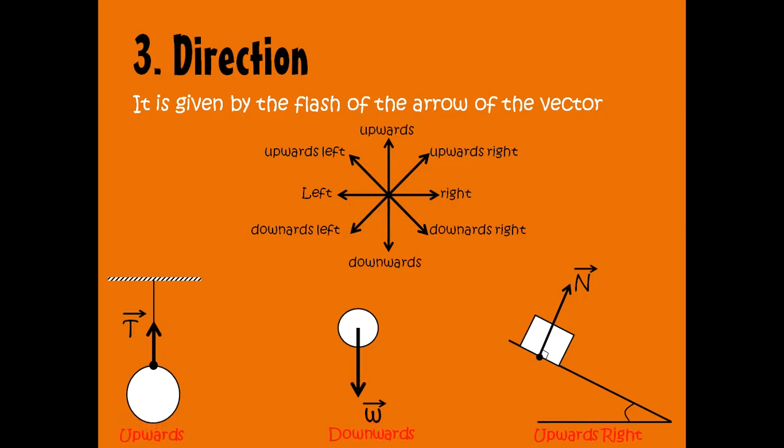The direction of the vector is given by the arrowhead of the vector. It's either upwards, downwards, right, left, or upwards-right — these are the eight directions. In the first figure, the tension is upwards, the weight is downwards, and the normal is upwards to the right.